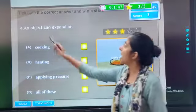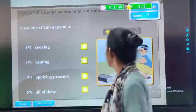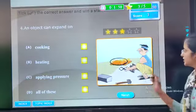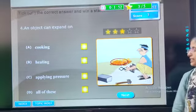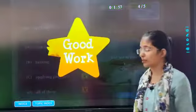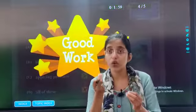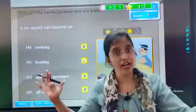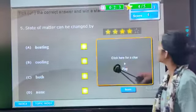Then next. An object can expand. See. What is this gentleman doing? He is heating an iron rail. So our answer is heating. When we heat a metal, it expands.